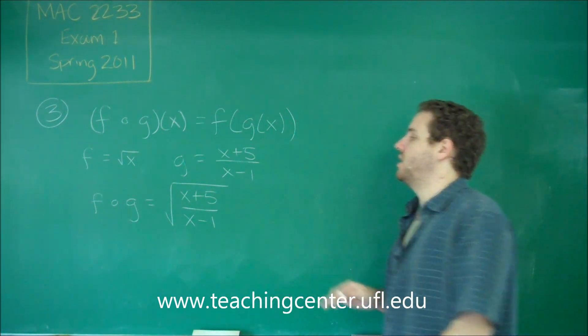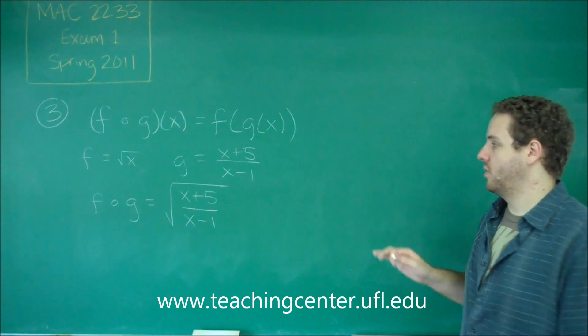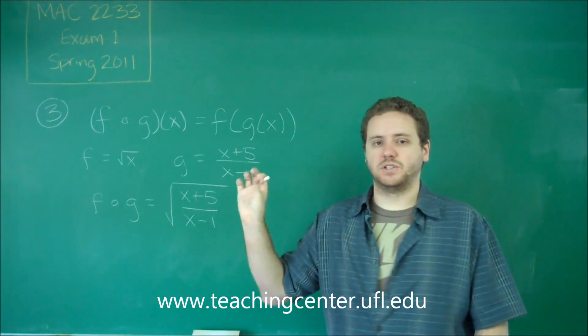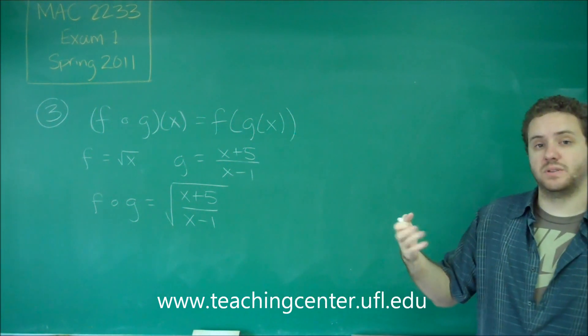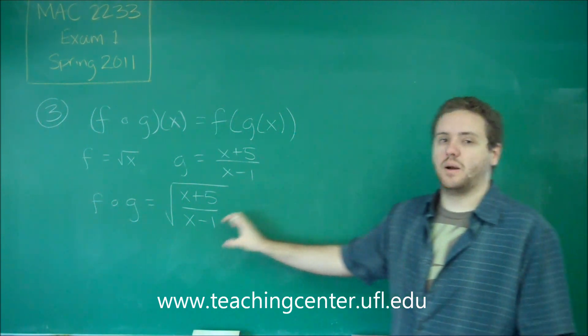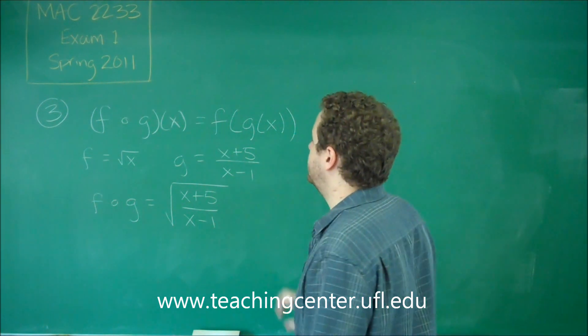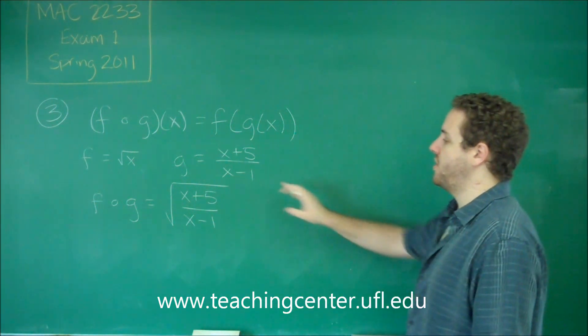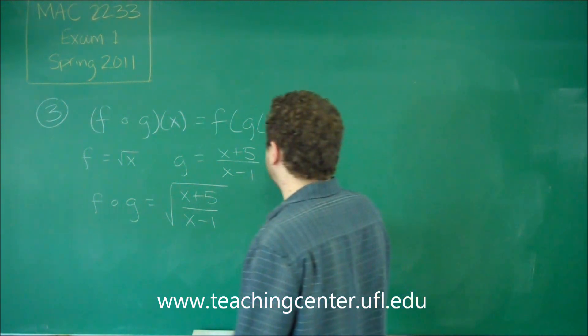So now we just need to figure out its domain. Remember that when you do function composition, domain of your original interior function matters as well as what the domain is of your composition. So we do have to look at g by itself. And the only thing that g had was that x can't equal one.